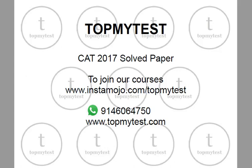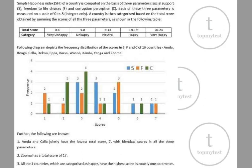This is a set from the CAT 2017 LRDI question paper. If you have any comments or feedback on our videos, please let us know on our WhatsApp number: 9146064750. This is a very tricky and pretty difficult-looking set — it's difficult because there is not a lot of data and many multiple cases are possible.